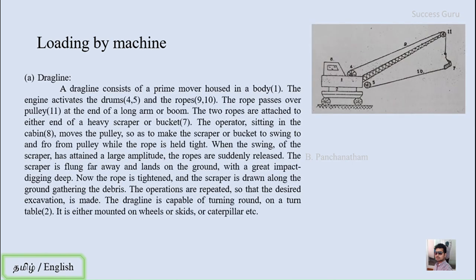The first loading machine is the dragline. This sketch shows the dragline. The dragline consists of a prime mover and a housing body. The engine activates drums 4 and 5 and ropes 9 and 10 — two drums that rotate forward and backward. The rope passes over pulley 11 at the end of the long arm or boom. The two ropes are attached to either end of a heavy scraper or bucket. The operator sitting in cabin 8 moves the pulley so as to make the scraper or bucket swing to and fro from the pulley while the rope is held tight.